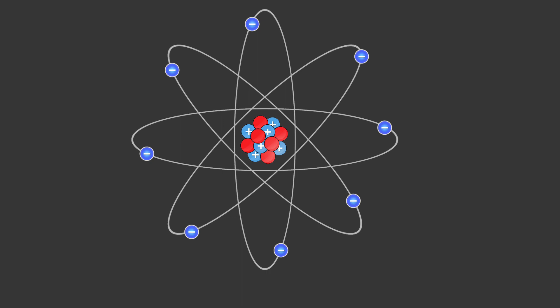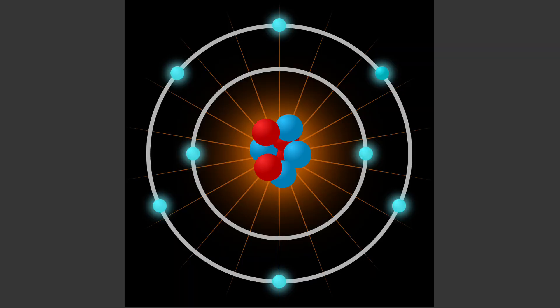Electrons. Electrons are negatively charged particles that orbit the nucleus in regions called electron shells or energy levels. These electrons are attracted to the positively charged protons in the nucleus by the electromagnetic force.